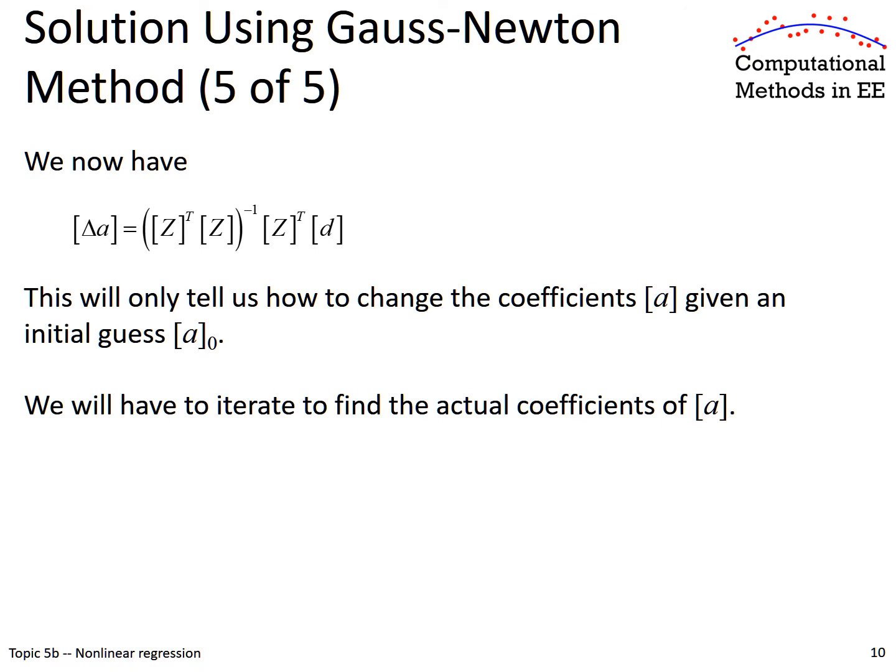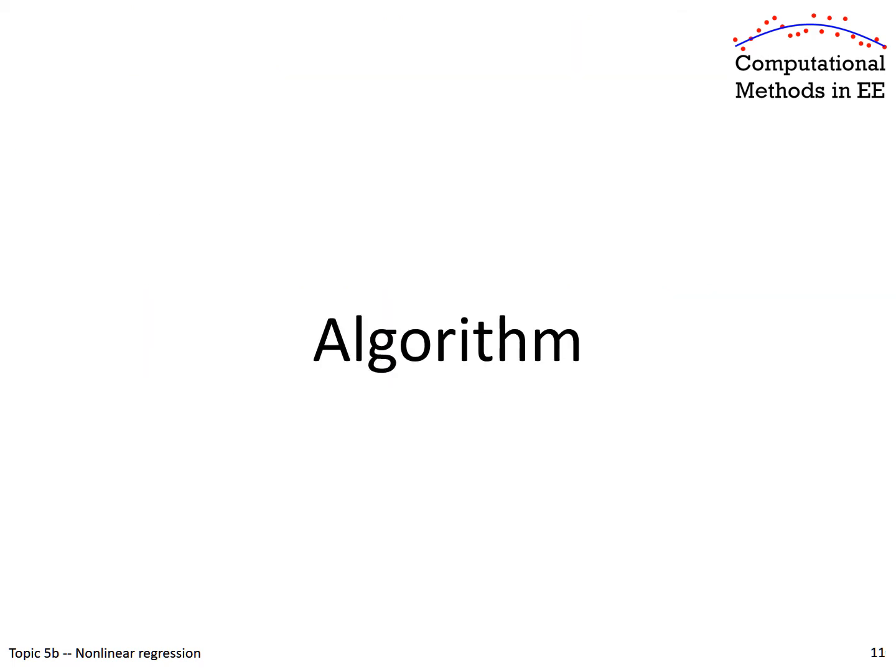We've solved for the delta-a column vector. From iteration to iteration, we're not solving for our new set of curve fit parameters directly — those we store in the column vector a. When we solve that matrix equation by least squares, it gives us delta-a: how much we have to change a in order to calculate our new curve fit parameters. So we iteratively do this.